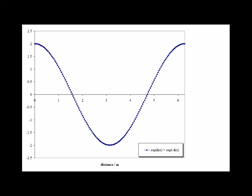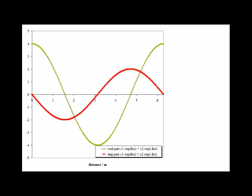Here we have the wave function solution e to the i kx plus e to the minus i kx, where each of the functions has a coefficient of 1. Note that the resulting linear combination forms an entirely real function. This free particle wave function is a general linear combination of the wave function.